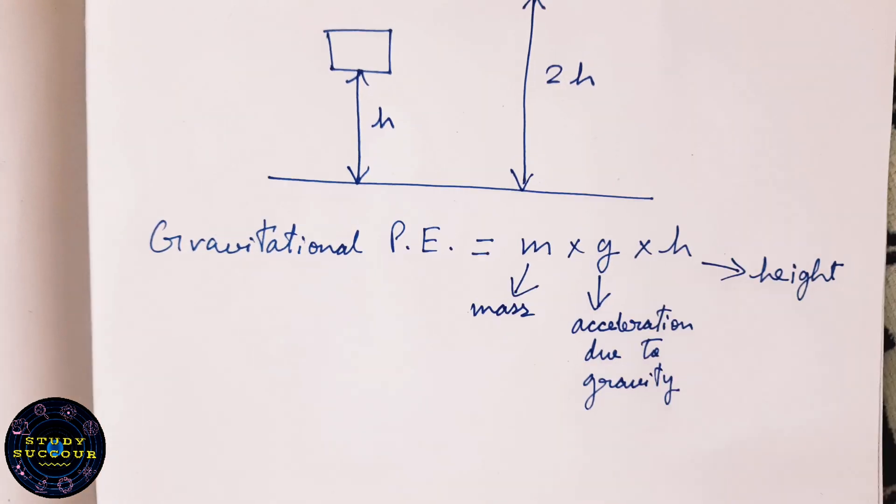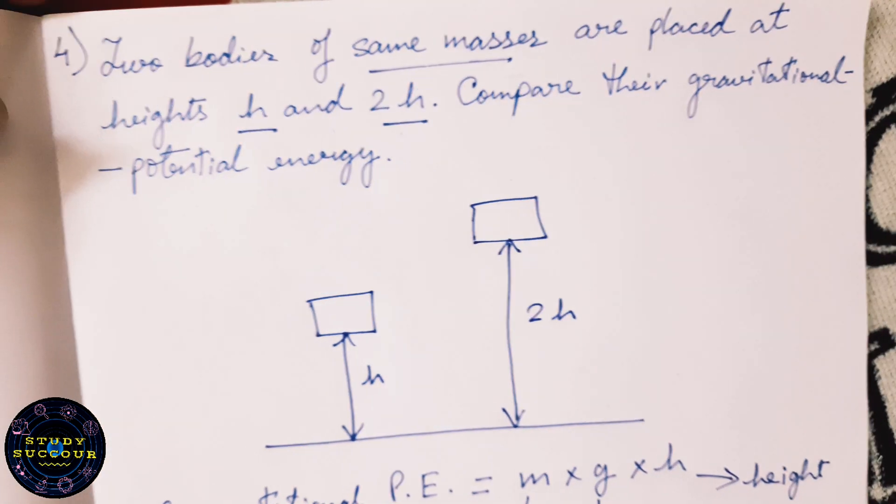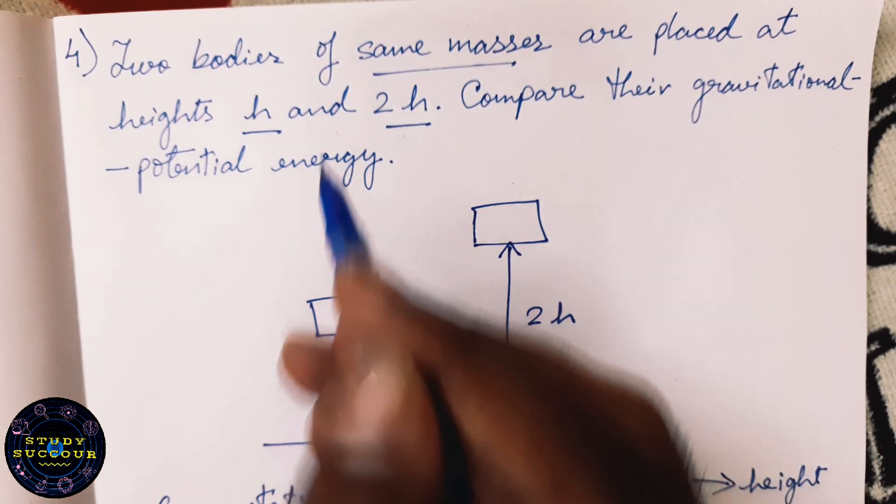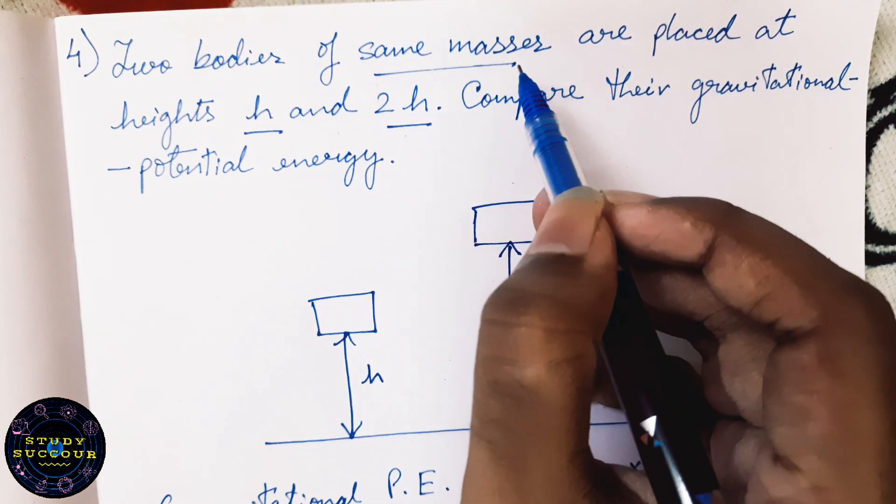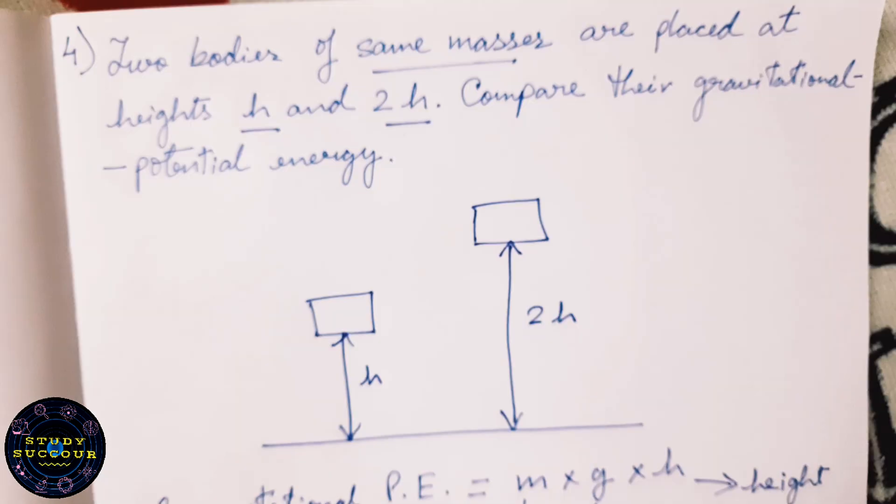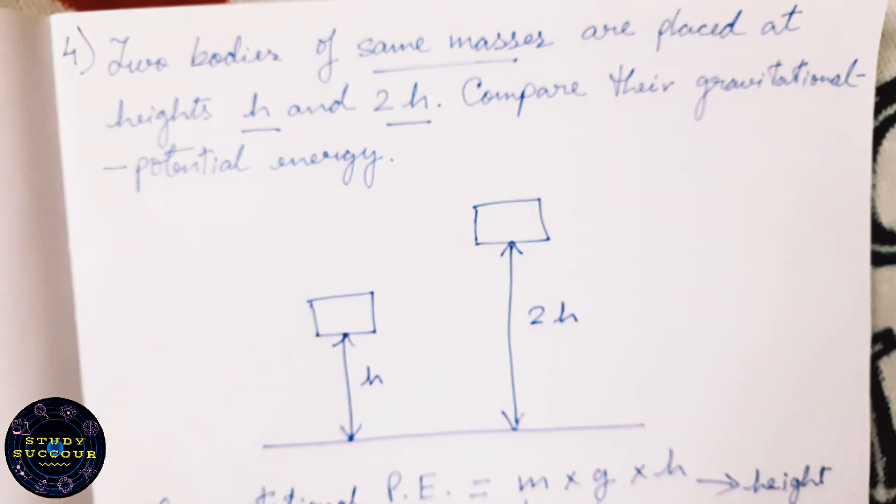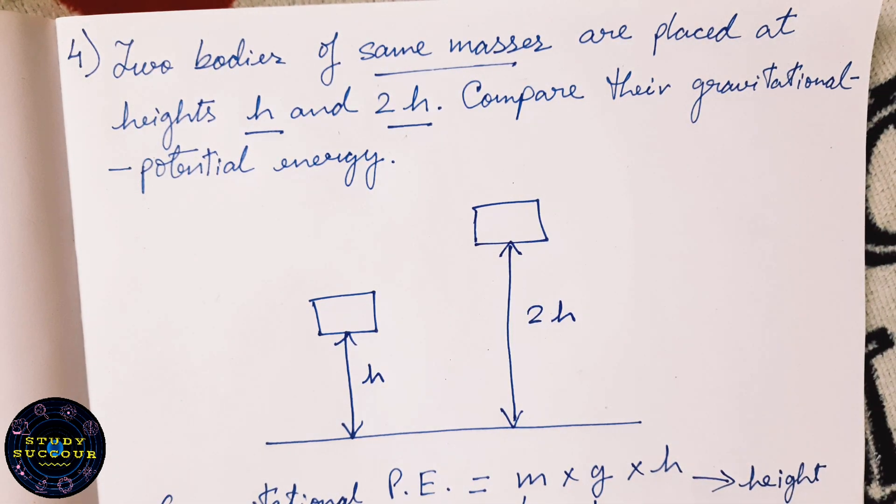From the question we have been already provided with the mass and height. As you can see, two bodies have same masses so we will write their masses as M only and their heights as H and 2H. But what about G?